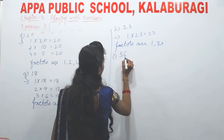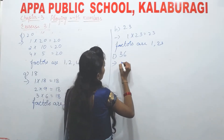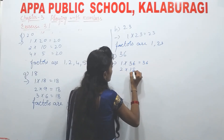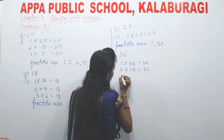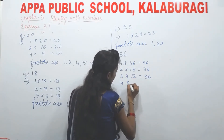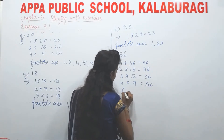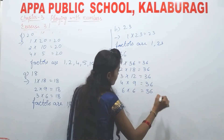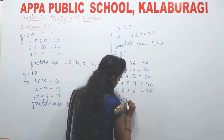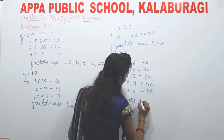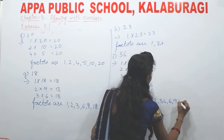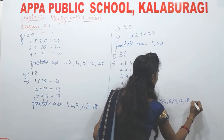Next, I is 36. 1×36=36, 2×18=36, 3×12=36, 4×9=36, 6×6=36. So therefore the factors of 36 are 1, 2, 3, 4, 6, 9, 12, 18, and 36.